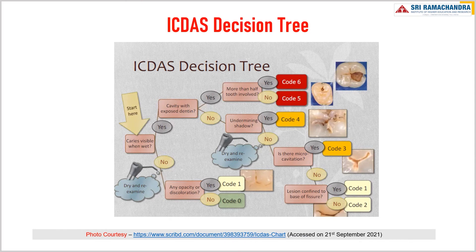The ICDAS decision tree: if caries is visible when wet, after drying and re-examination, if any opacity or discoloration is seen it should be coded as 1; if no opacity or discoloration is seen it is code 0. After caries is visible when wet, check whether there is a cavity with exposed dentin. If yes, check whether more than half the tooth is involved — if so, it is code 6; if less than half, it is code 5. If there is no exposed dentin cavity, check whether there is an undermining shadow — if yes, code 4. If no undermining shadow, check for microcavitation — if present, code 3. If no microcavitation, check whether the lesion is confined to the base of the fissure — if yes, code 1; if not confined to the base of the fissure, code 2.